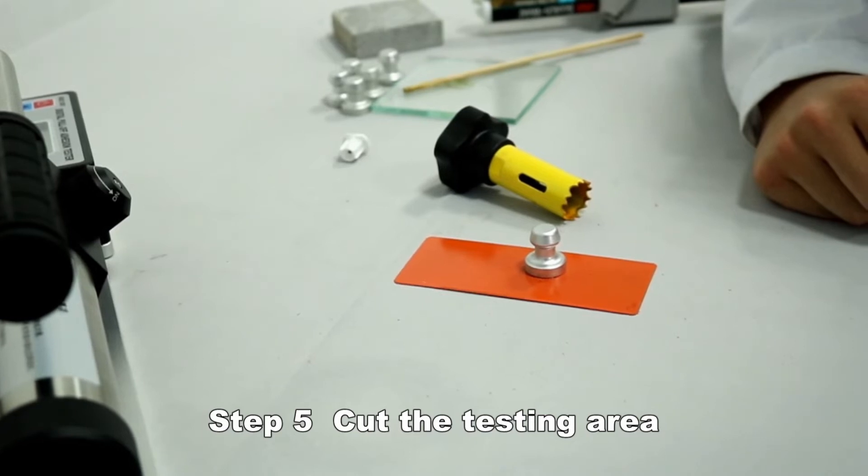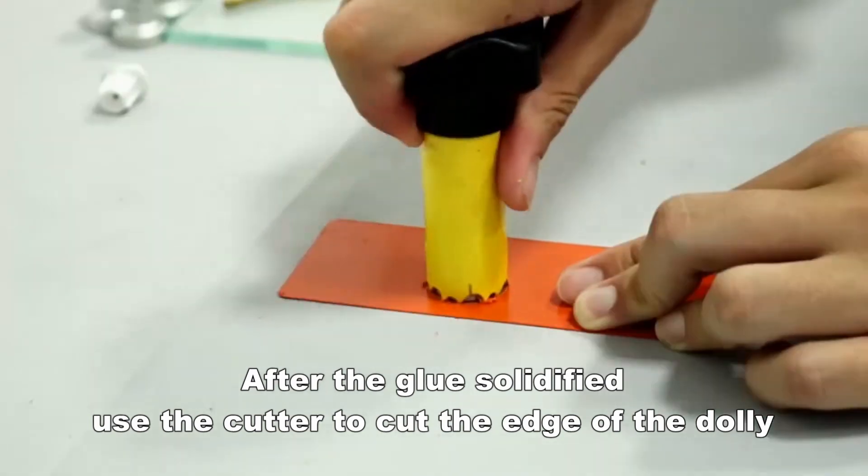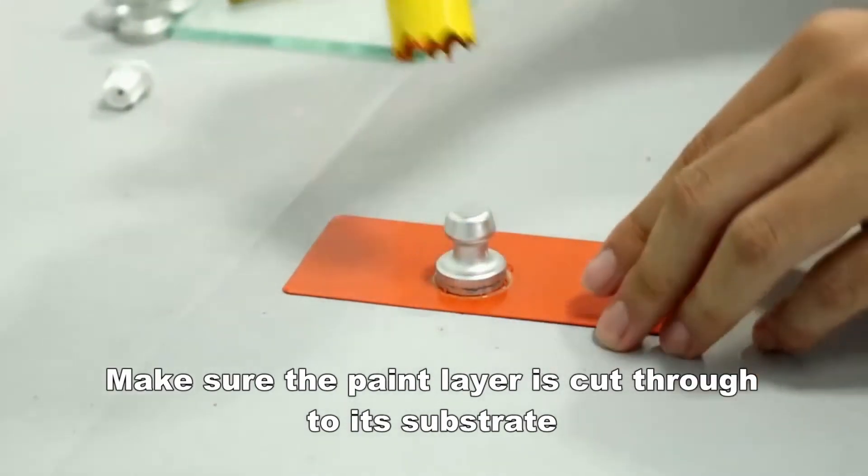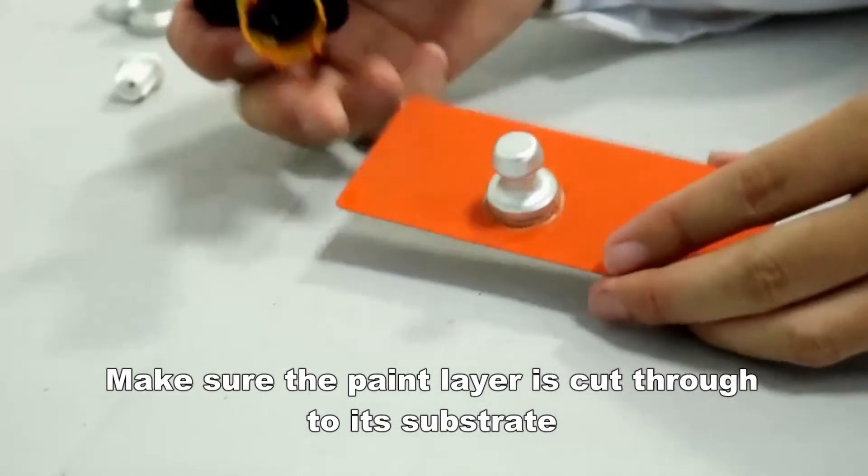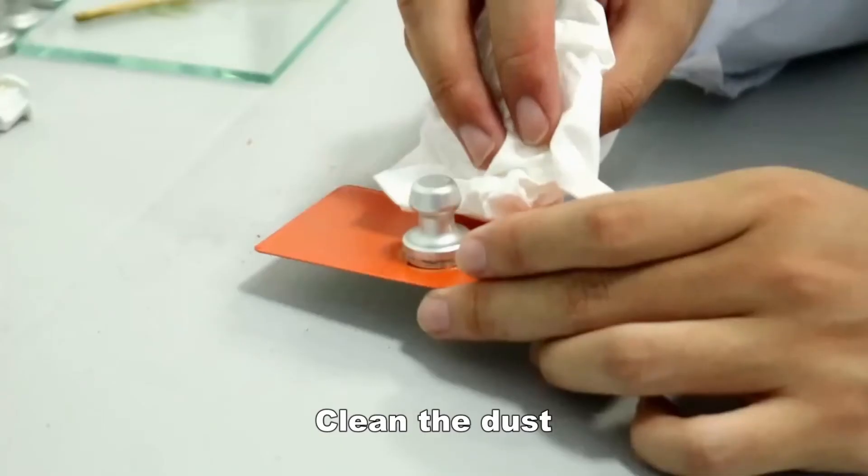Cut the testing area after the glue is solidified. Use the cutter to cut the edge of the dolly. Make sure the paint layer is cut through to its substrate. Clean the dust.